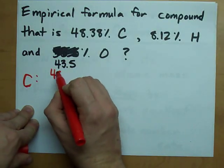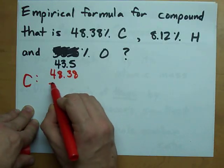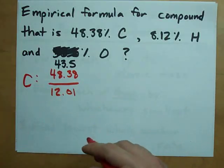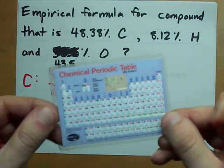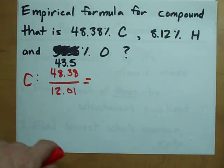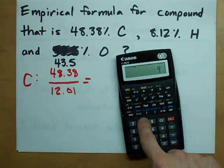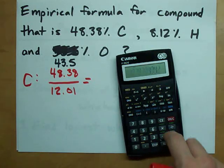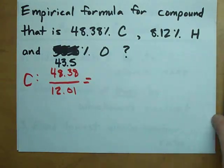Carbon, 48.38% divided by its atomic mass, 12.01. Do you know how I knew? Because I looked it up on my table. When you do that on your calculator, you end up with 48.38 divided by 12.01 gives me 4.03.